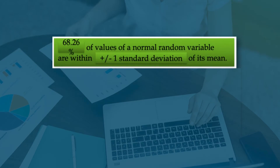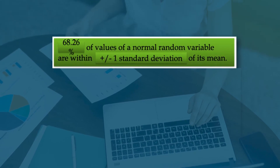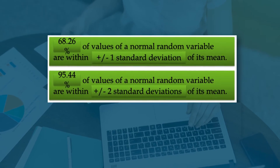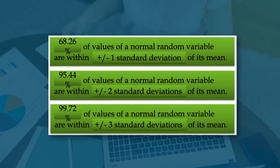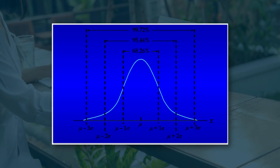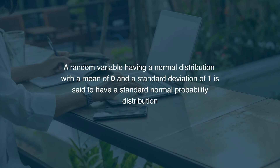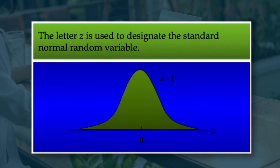68.26% of values of a normal random variable are within plus or minus 1 standard deviation of its mean. 95.4% of values are within plus or minus 2 standard deviations of the mean. 99.72% of values are within plus or minus 3 standard deviations of the mean. A random variable having a normal distribution with a mean of 0 and a standard deviation of 1 is said to have a standard normal probability distribution, and the letter z is used to designate the standard normal random variable.